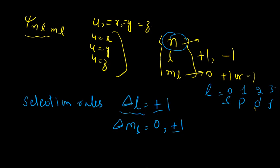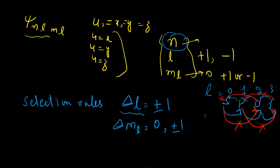Since l specifies the orbital shell — l=0 is s, l=1 is p, l=2 is d, l=3 is f — when delta-l is plus or minus one, the transition from s to p is possible, from p to d is allowed, and from d to f is also allowed. However, from s to d is not an allowed transition, from p to f is also not allowed, and from d to s or f to p are also not allowed. Only those transitions where delta-l equals plus or minus one and delta-ml is zero or plus or minus one are allowed.